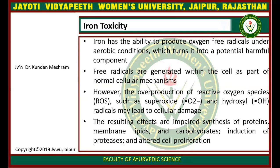Free radicals are generated within the cell as part of normal cellular mechanisms. However, the overproduction of reactive oxygen species such as superoxide and hydroxyl radicals may lead to cellular damage. The resulting effects include impaired synthesis of proteins, membranes, lipids, and carbohydrates, and induction of proteins.